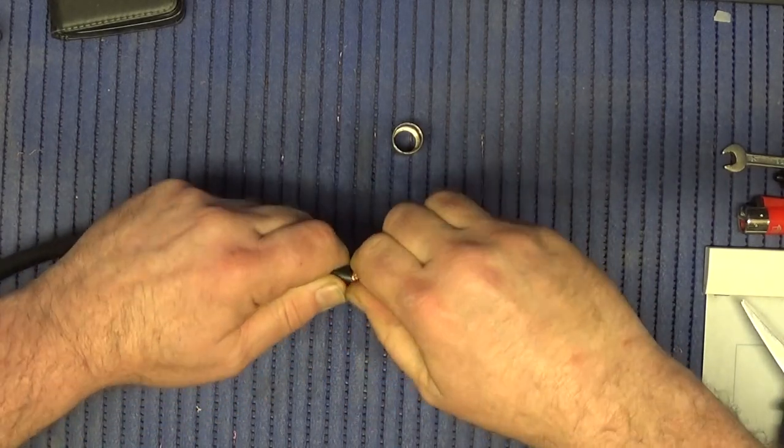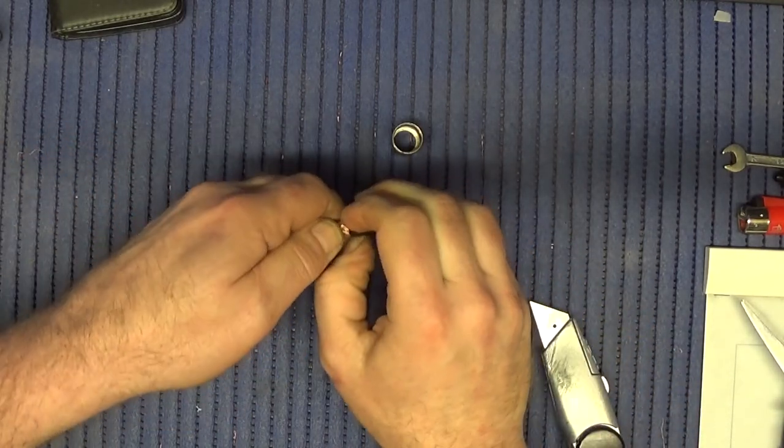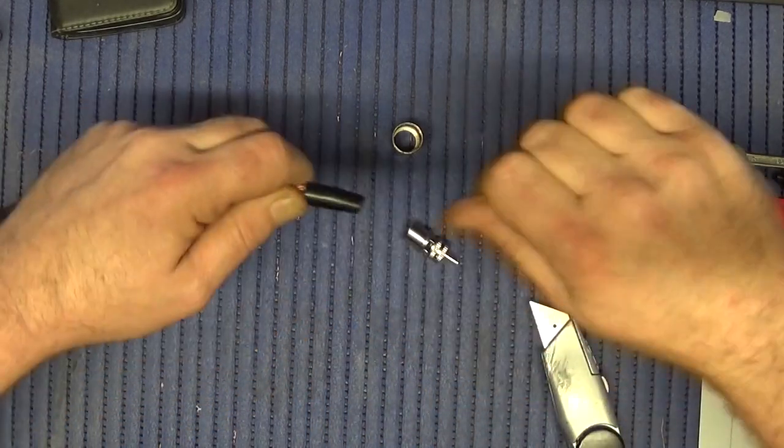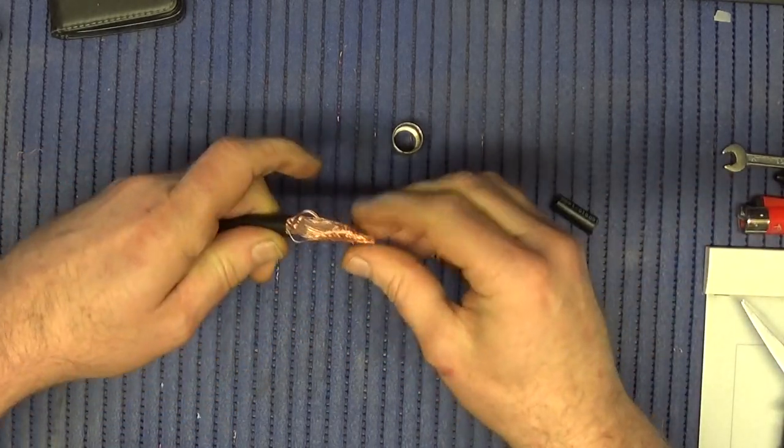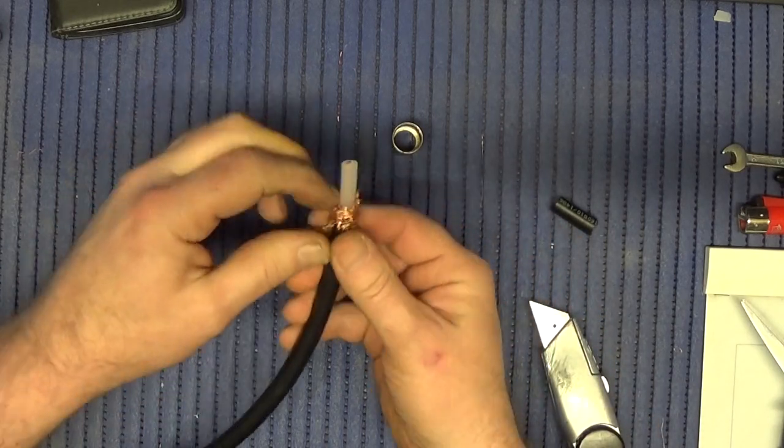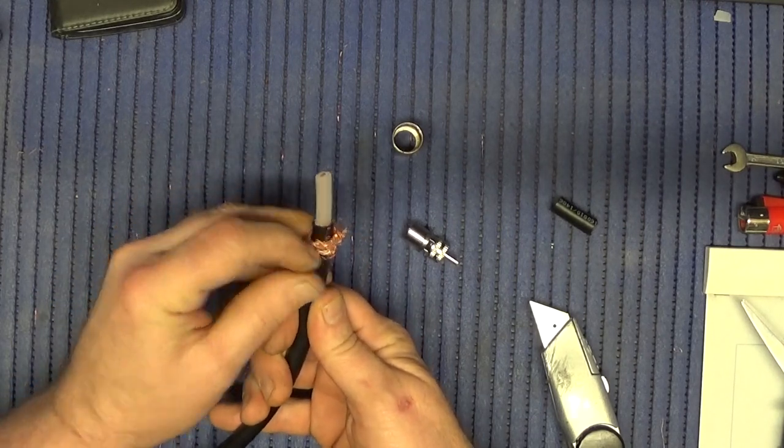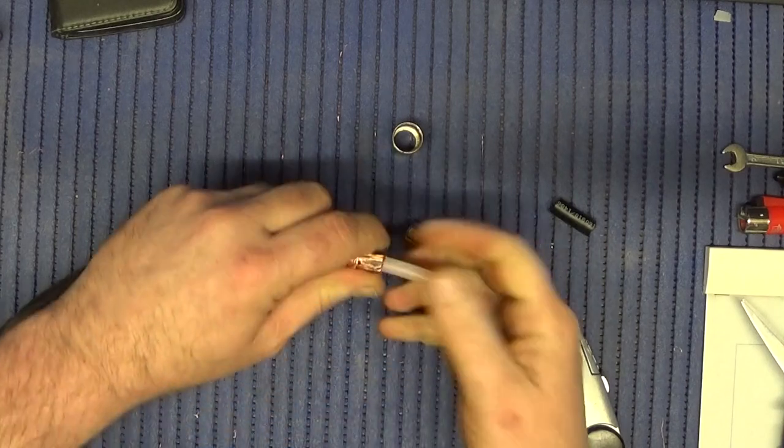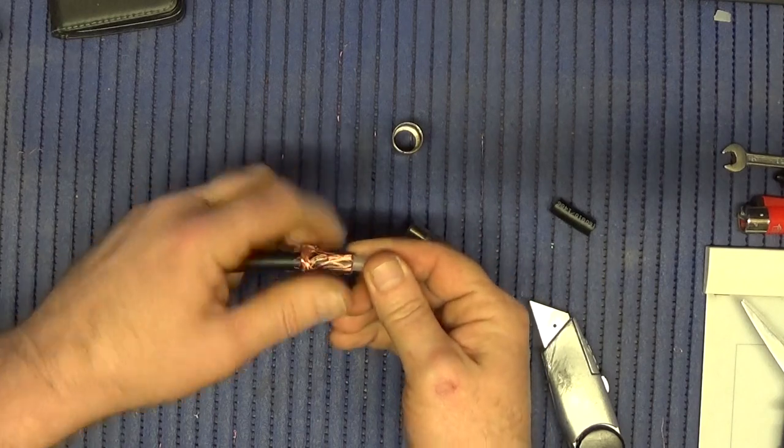Now be careful you don't go too deep because what will happen is you'll cut the braid, and we want to try and keep the braid as intact as possible because we're going to fold that back on itself like that, and just remove those lines and go as tight.